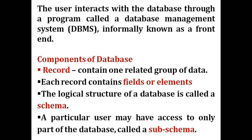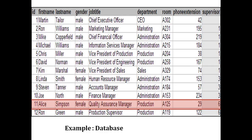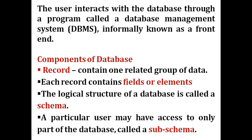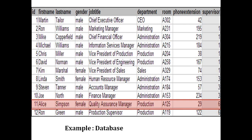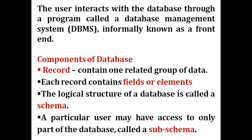What are the components of a database? The first component is a record — it contains one related group of data. A record has been highlighted with employee ID 11, Alice Simpson, female, quality assurance manager. The whole row represents one record. Each record contains fields or elements. The logical structure of a database is called a schema. The whole structure is a schema, and if you take a part of that structure, that is what a sub-schema is. A particular user may have access to only part of the database, called a sub-schema.